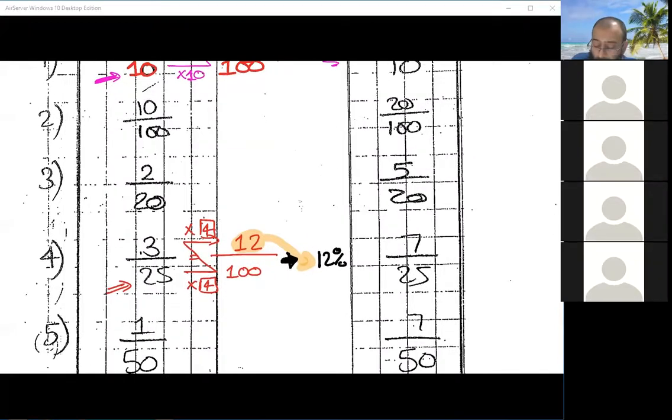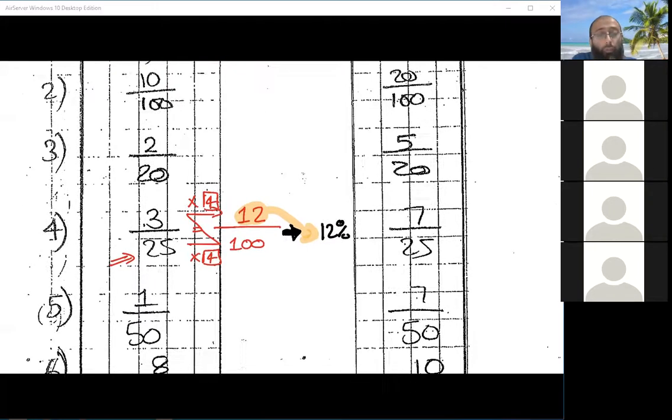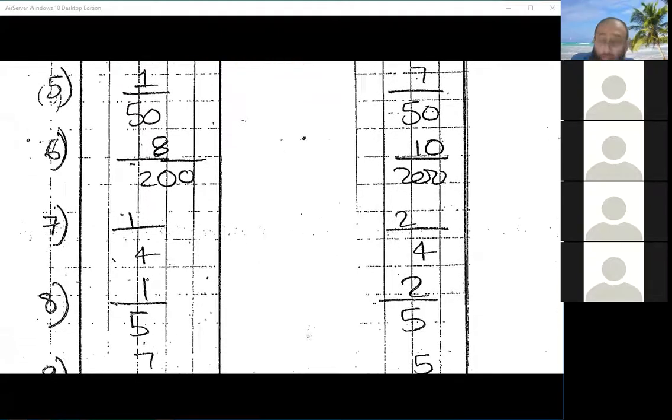So we can put an equal sign as well as equal to equivalent to 12%. So 12 over 100 is the same as 12%.